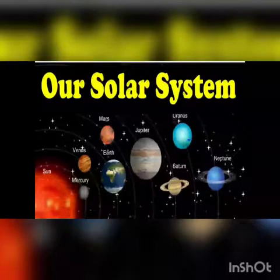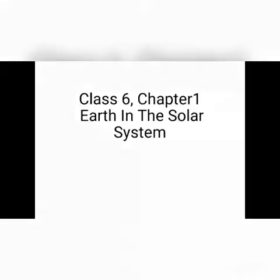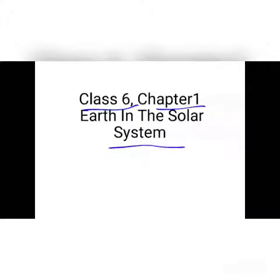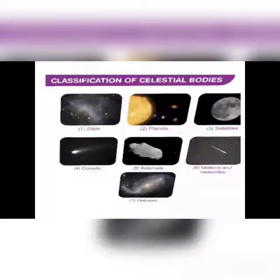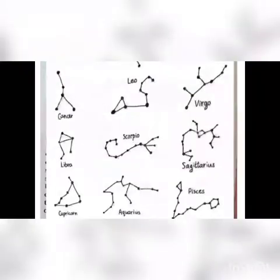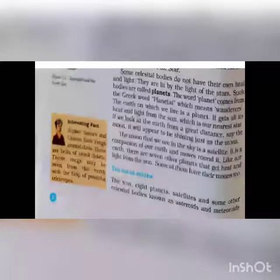A very warm welcome to all of you. Let's start with Geography Class 6, Chapter 1 - 'Earth in the Solar System.' In this chapter, topics regarding stars, different phases of the Moon, celestial bodies, constellations, and the pole star have already been completed. Today we will start the Solar System.